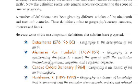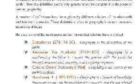Alexander von Humboldt defined geography as a synthesized discipline that connects the general with the particular, showing measurement and mapping in an original and comprehensive way.